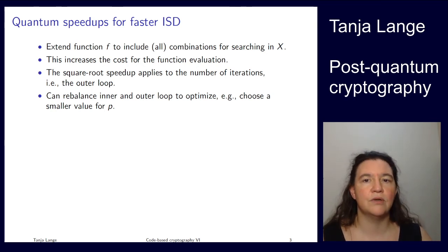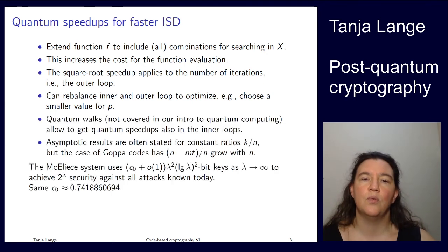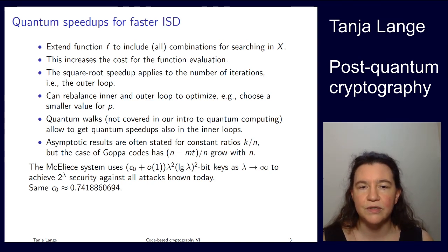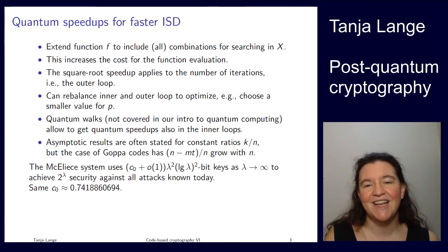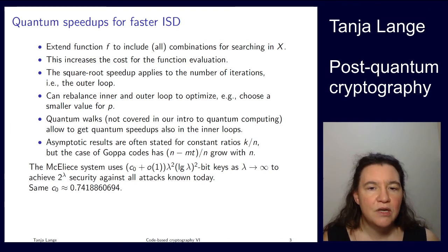Now Shor on Grover is not the whole story. There is, in particular, one class of function called quantum walks, which is a generalization of Grover's algorithm. And that allows you to also get quantum speedups inside the inner loops. So you can also obtain a speedup on this matching, kind of similar to how Stern gets this small speedup from doing collisions. You can also get a quantum speedup on searching all through those operations. It gets more complicated. But the best we know how to do is getting a square root on the whole cost.